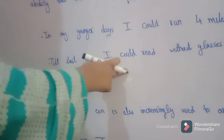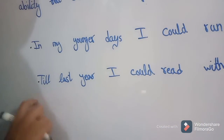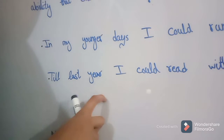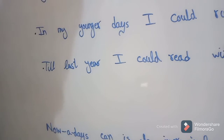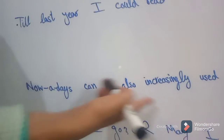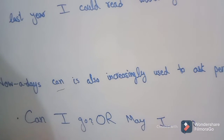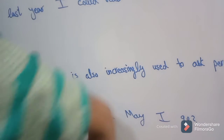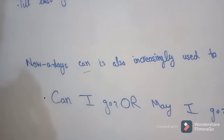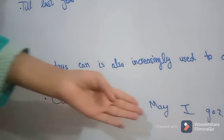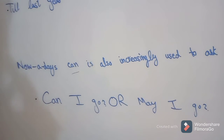Could is used about the ability that existed in the past — like in my younger days, or till last year. Nowadays, can is also increasingly used to ask permission, like can I go or may I go. Can is used in the sense of may.